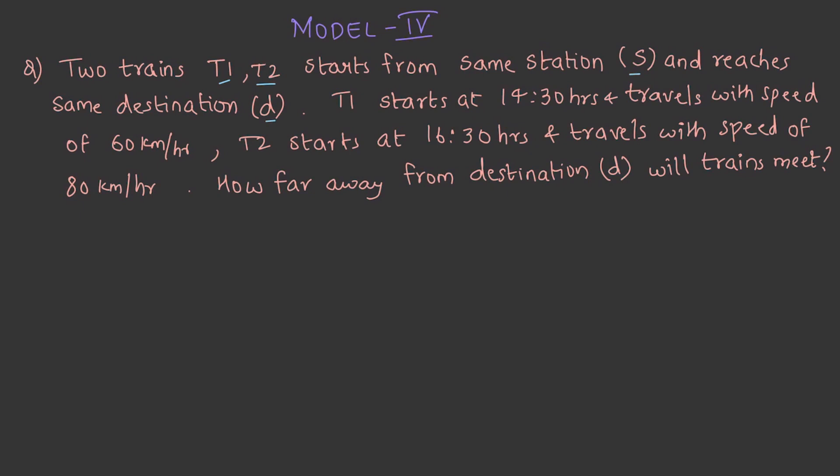T1 starts at 1430 hours and travels with a speed of 60 kilometers per hour. T2 starts at 1630 hours and travels with a speed of 80 kilometers per hour.